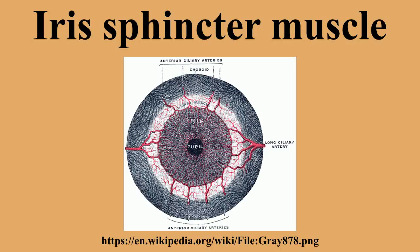The iris sphincter muscle is a muscle in the part of the eye called the iris. It encircles the pupil of the iris, appropriate to its function as a constrictor of the pupil. Comparative anatomy: it is found in vertebrates and some cephalopods.